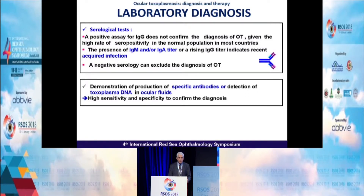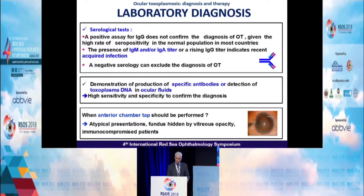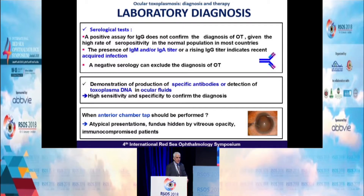Regarding laboratory diagnosis: the diagnosis of ocular Toxoplasmosis is mainly based on clinical features; however, laboratory investigation is needed to confirm the diagnosis, mainly in atypical situations. A positive serologic test does not confirm the diagnosis, given the high rate of seropositivity in the normal population in most countries. However, demonstration of specific antibody production or detection of Toxoplasma DNA in ocular fluids has high sensitivity and specificity to confirm the diagnosis.